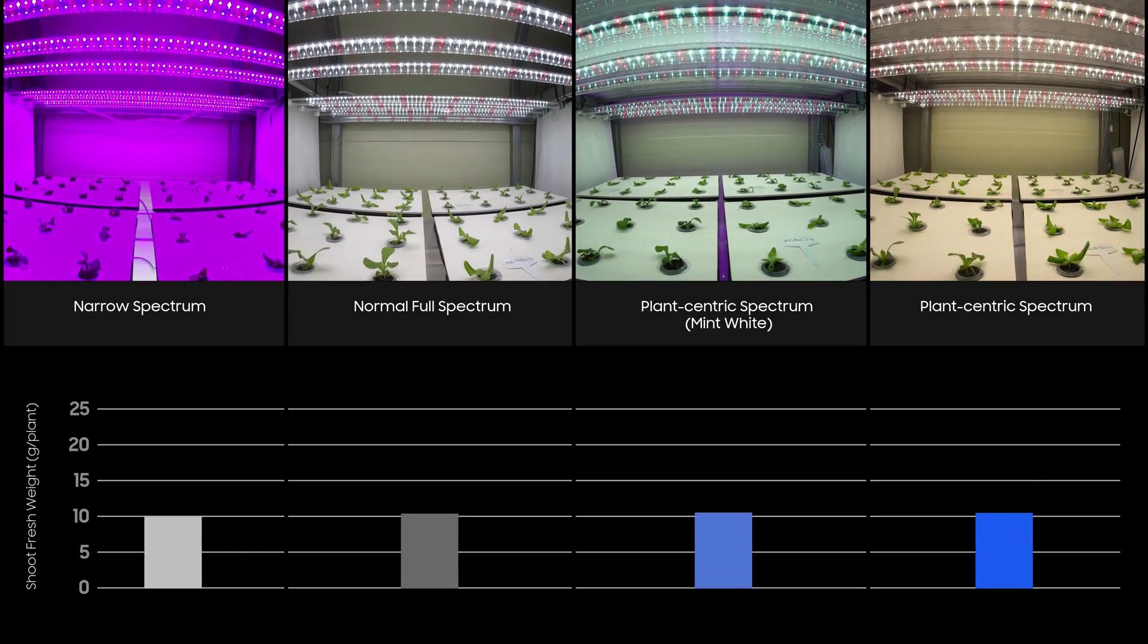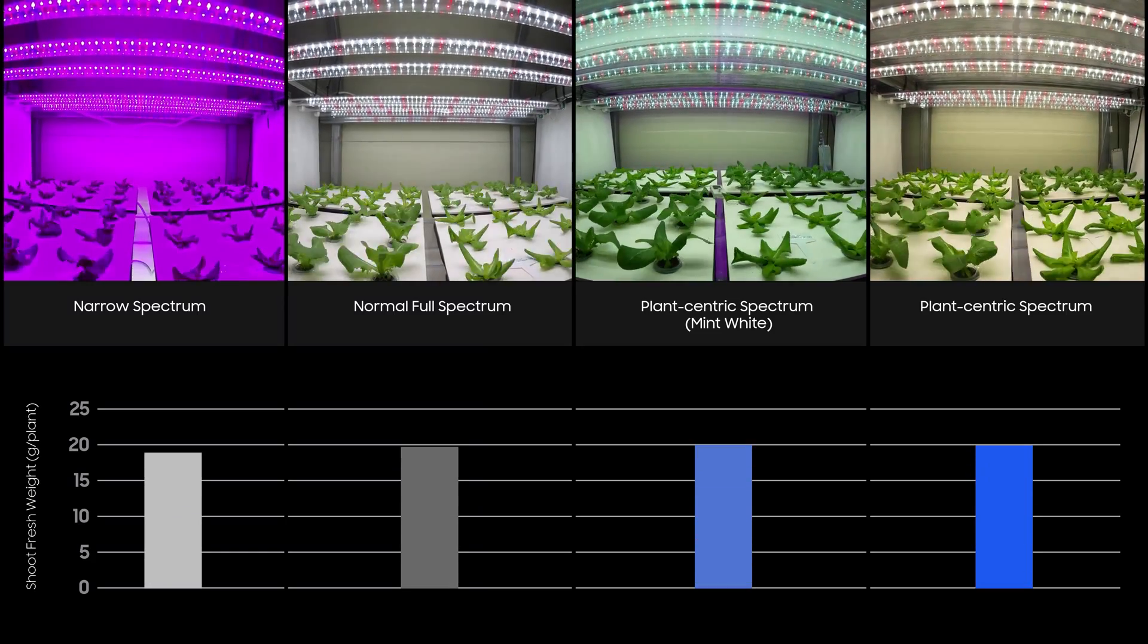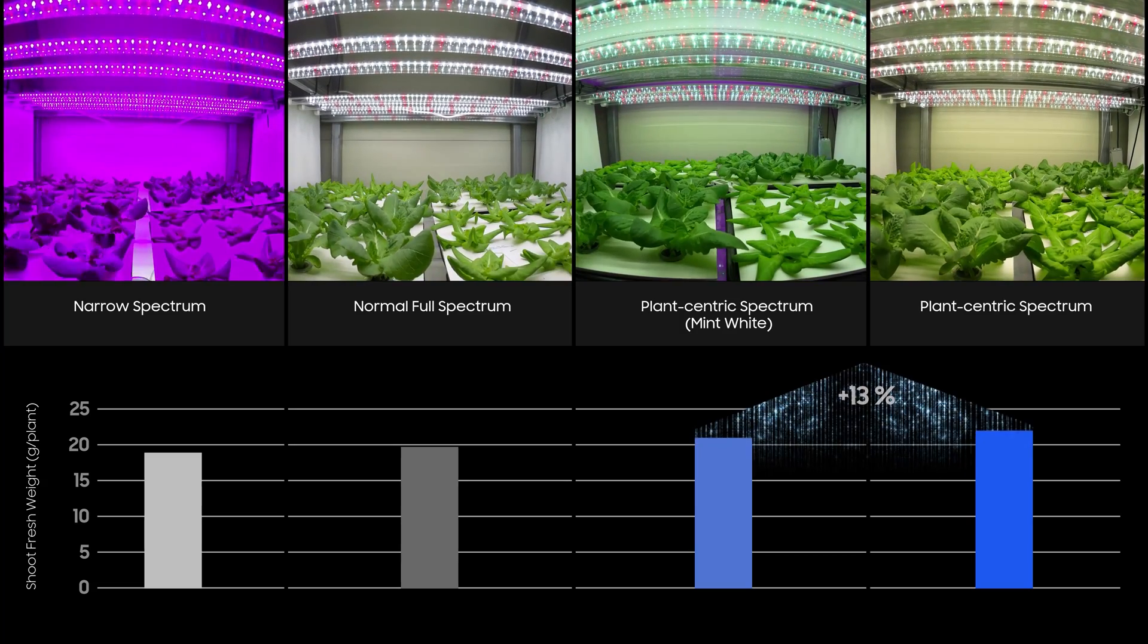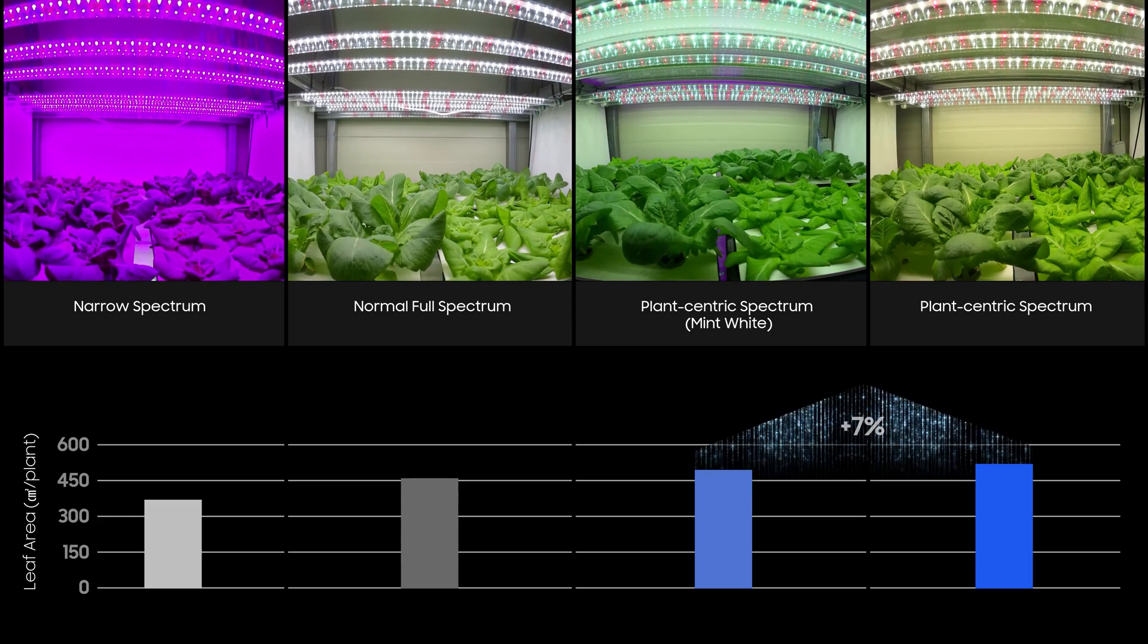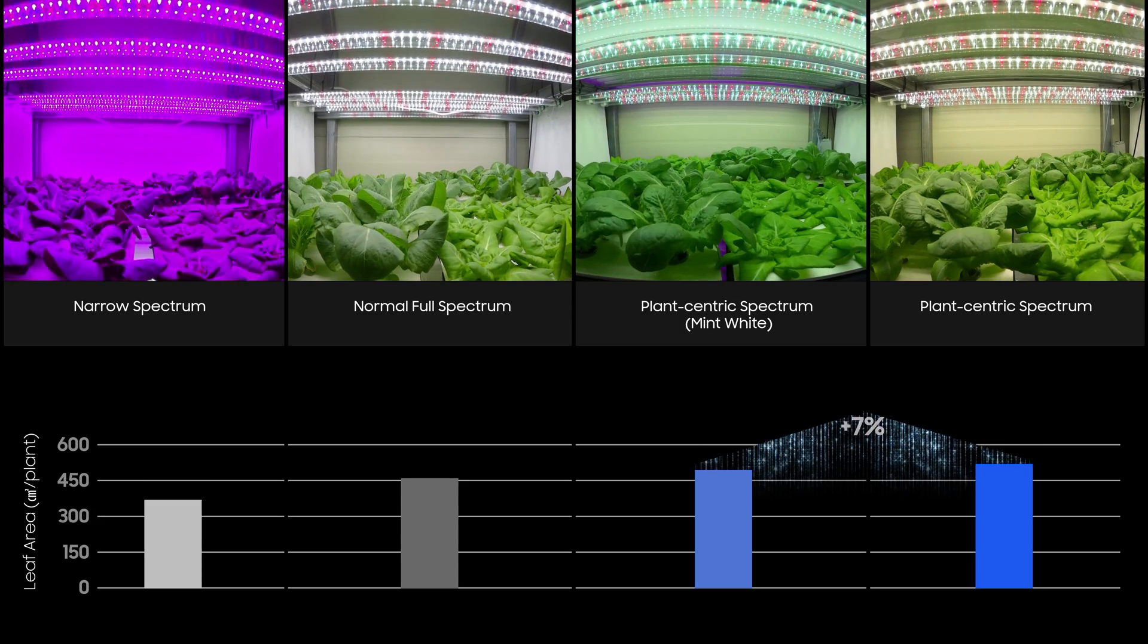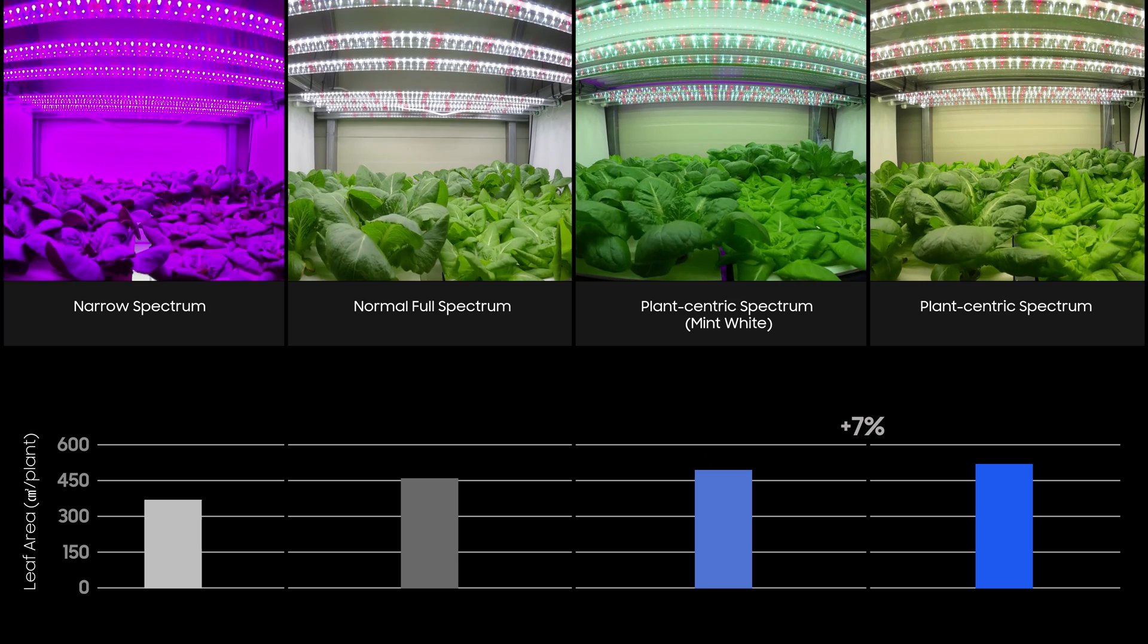Crops grown under 437 nanometer based full spectrum lighting produced more biomass with leaf area larger than the crops grown under the narrow red and blue or the normal full spectrum lights.